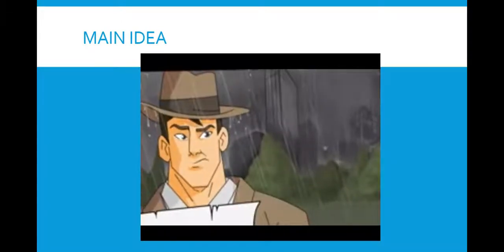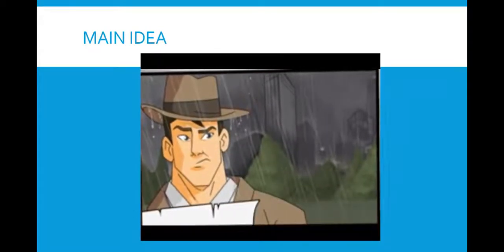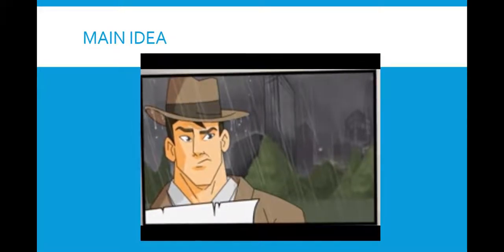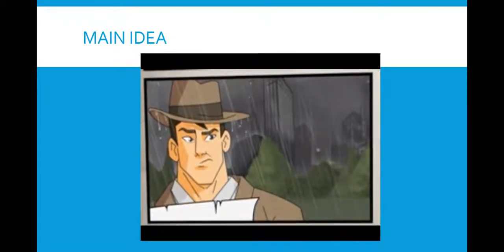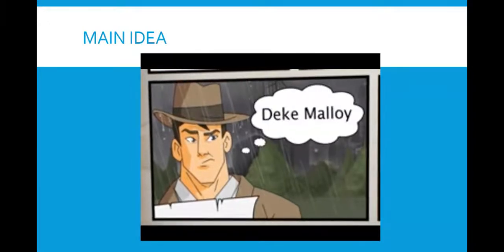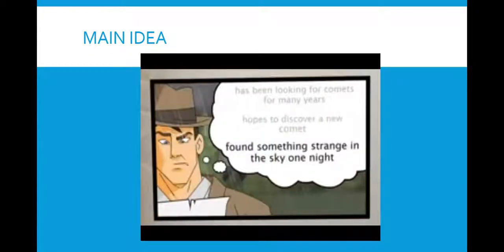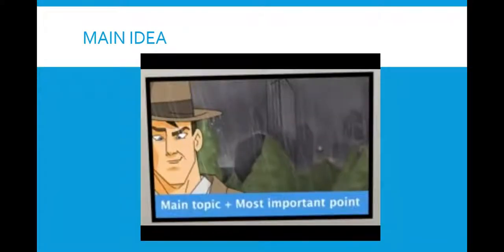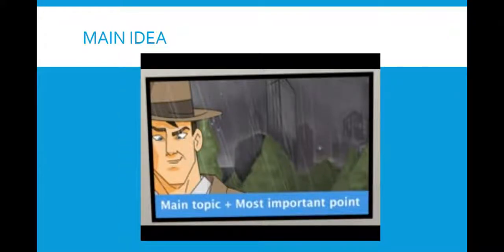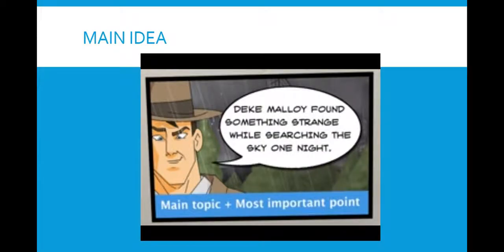Now to get the main idea. We need to find the main topic of the article, and the most important point about the main topic. The main topic seems pretty easy. Deke Malloy. He's the only one in this article. What do we know about him? He has been looking for comets for many years. He hopes to discover a new comet, and he found something strange in the sky one night. I think finding something strange in the sky is probably the most important of these things. So I need to put the main topic, Deke Malloy, together with the most important point to get the main idea.